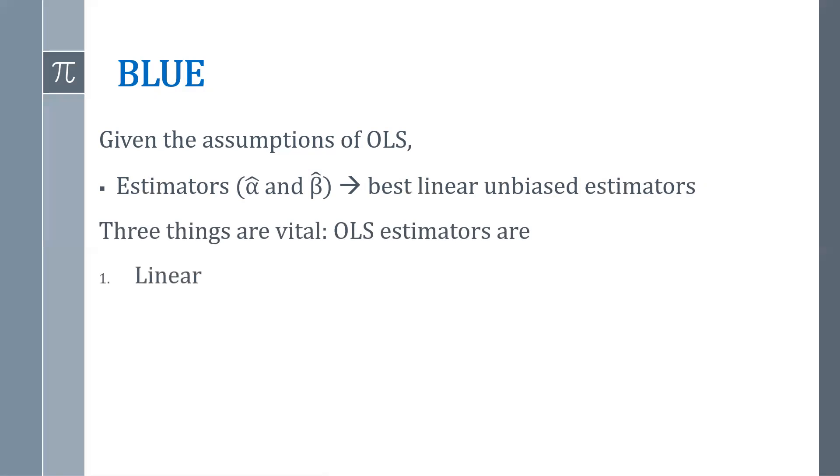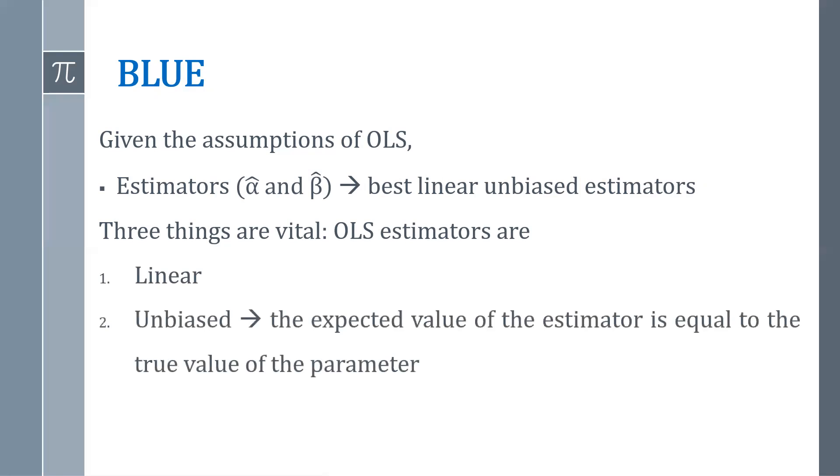Now, given the assumptions of OLS, estimators alpha hat and beta hat are best linear unbiased estimators if they are linear, second, they are unbiased—that means the expected value of the estimator is equal to the true value of the parameter—and have minimum variance.